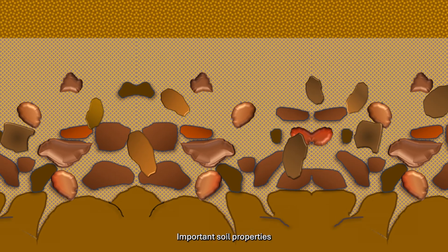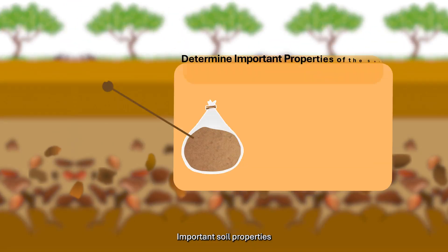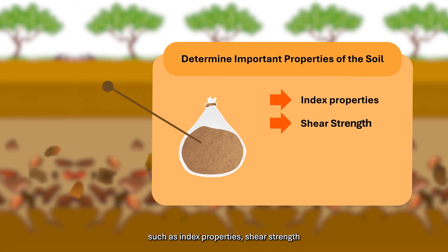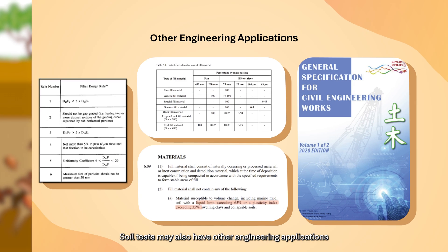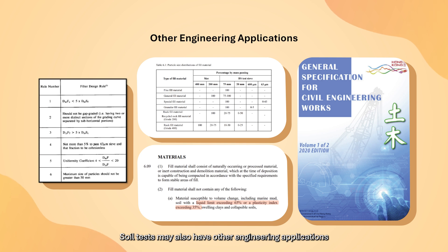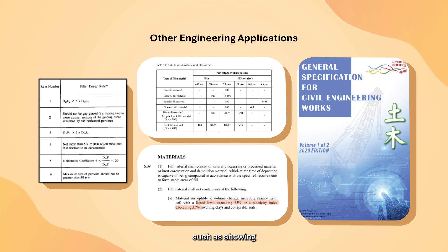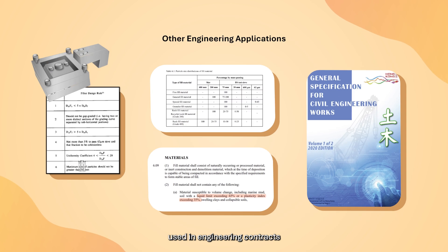Important soil properties such as index properties, shear strength, compressibility, and permeability can also be determined from representative samples. Soil tests may also have other engineering applications, such as showing compliance of the materials used in engineering contracts.